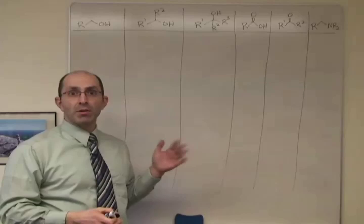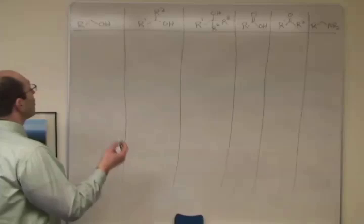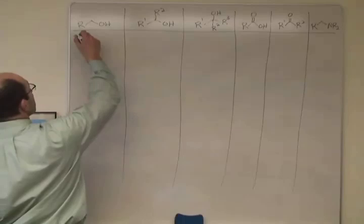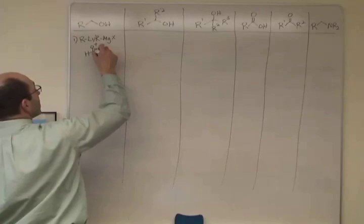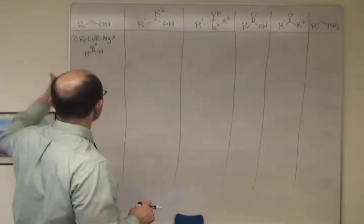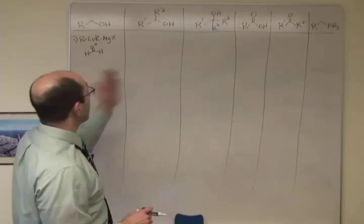And your job is to figure out which reactions are going to give you which products. But for example, what would you do for this table? We already said that we can make a primary alcohol by taking RLI or RMGX and reacting it with formaldehyde. So that's the first way to make a primary alcohol. And then if there are others, you would list them down in this column until you got to all the ways to make a primary alcohol. Then you'd move on to secondary alcohol.